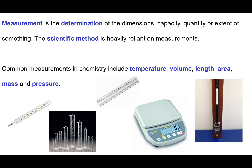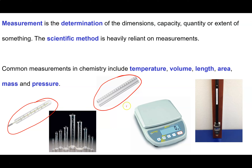Some measuring devices have what we call an analog scale — markings on them — and these are very common. Some measurements use a digital scale instead. The quality of an analog device depends on how close the markings are to one another, and also how well the device has been calibrated. So it's not just the number of markings; calibration matters too.